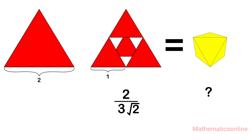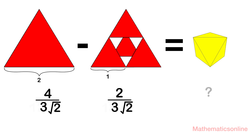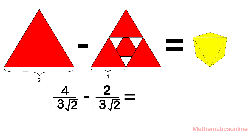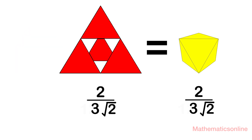If we take the larger tetrahedron with a side length of 2 and subtract the volume of the 4 smaller tetrahedrons, we can verify the volume of the octahedron. So if we substitute 2 into the formula and simplify, we can see that the volume of the octahedron is also equal to 2 over 3 times the square root of 2.